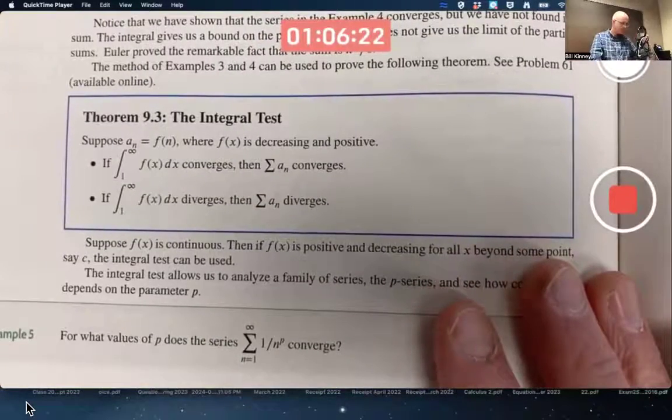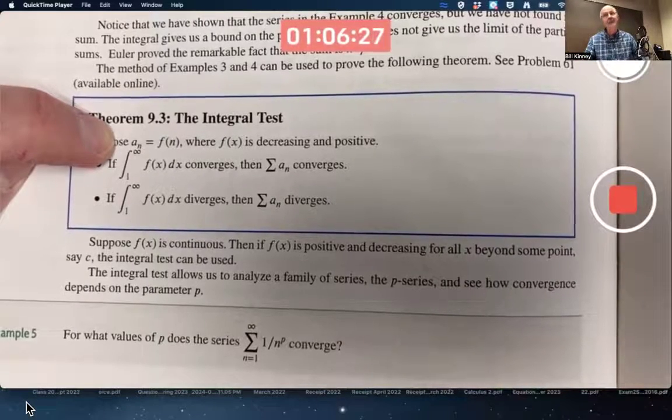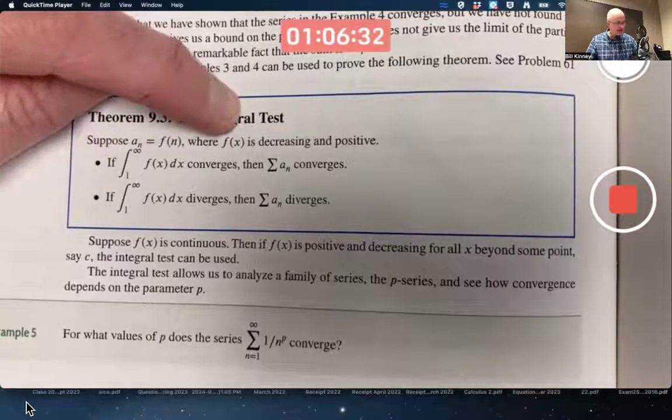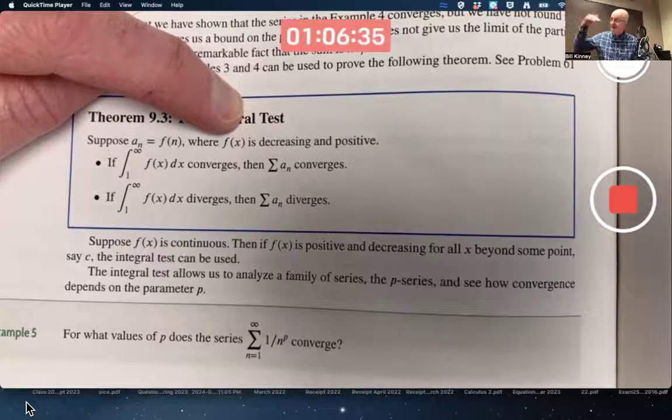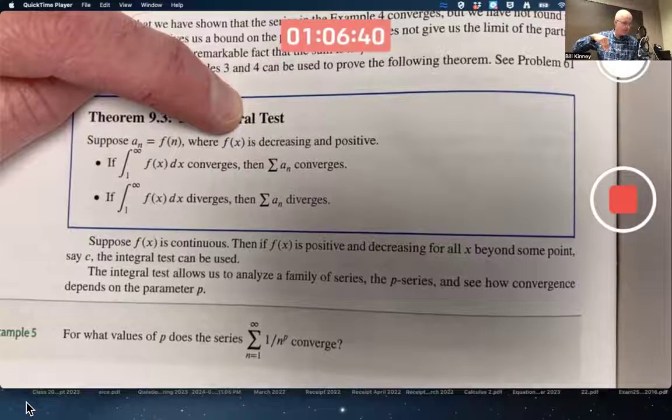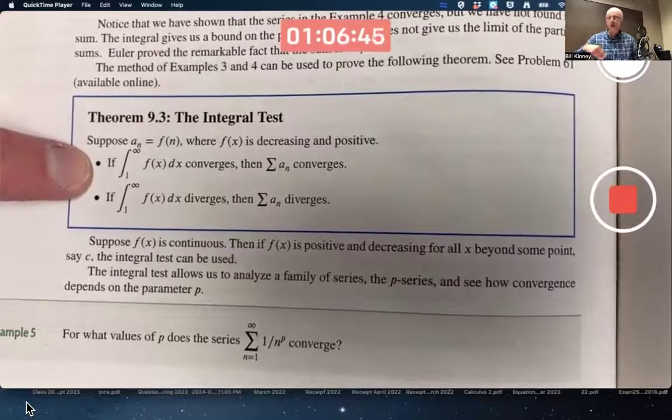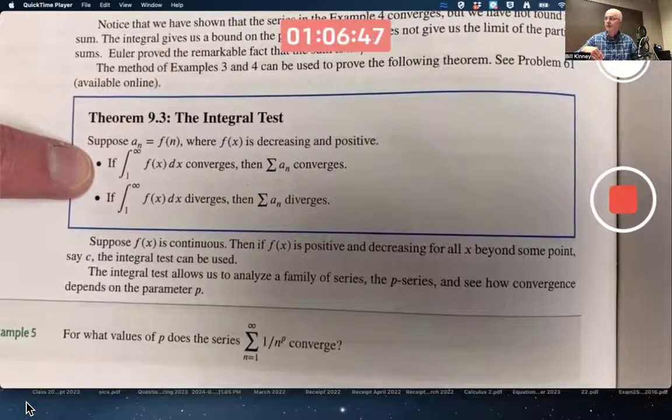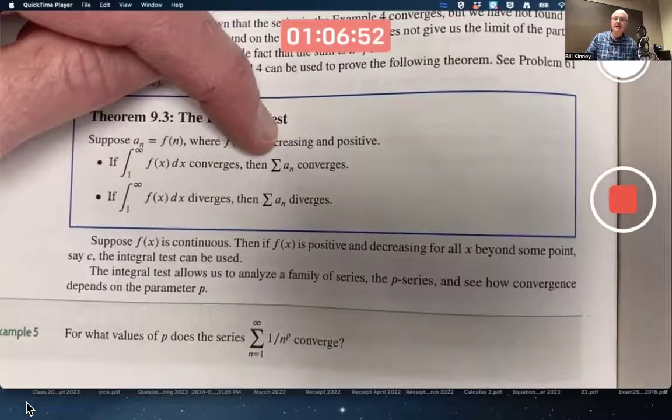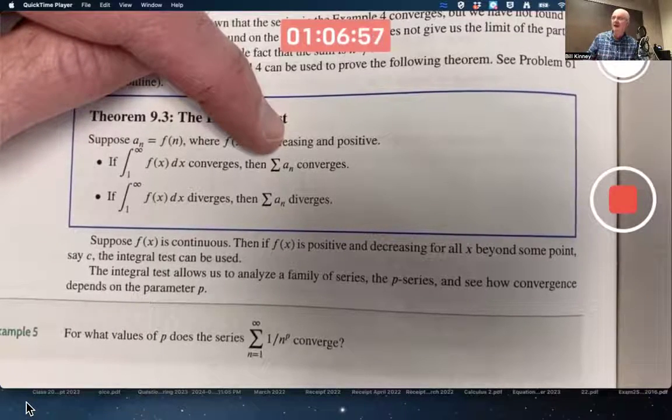Here's the integral test. Suppose a n equals f of n, or if you prefer a k equals f of k, the letter doesn't matter. And suppose f of x is a decreasing and positive function like our function 1 over x squared is. It's decreasing and positive by graph. When x is greater than or equal to 1 is the assumption here. If the integral, the improper integral of f from 1 to infinity converges like our example does, then the infinite series converges as well. Textbook is not writing n goes from 1 to infinity here. That's understood.